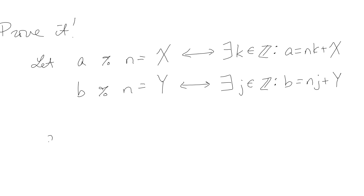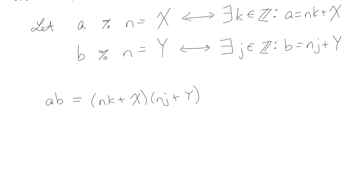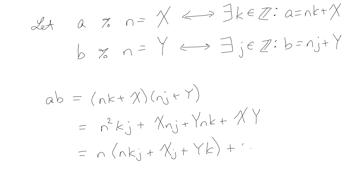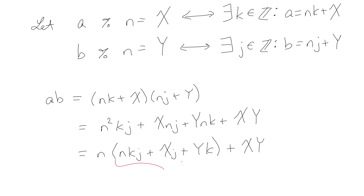What we're trying to show is what a times b equals. So a times b equals (nk plus x) times (nj plus y). Using the FOIL method, that gives us n squared kj plus x times nj plus y times nk plus xy. If I factor out an n from the first three terms, I have n times (nkj plus xj plus yk) plus xy. Now nkj, xj, yk are all integers, so that whole grouped expression is just some integer — let's call it l, where l is in the set of integers.